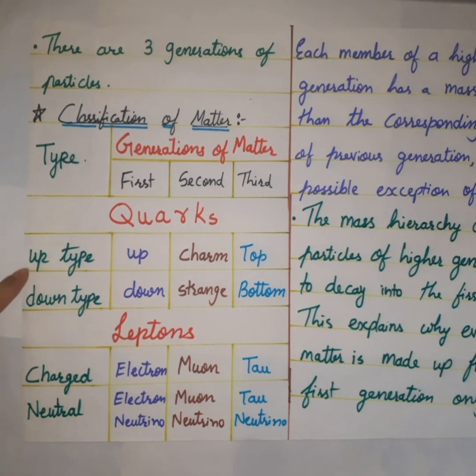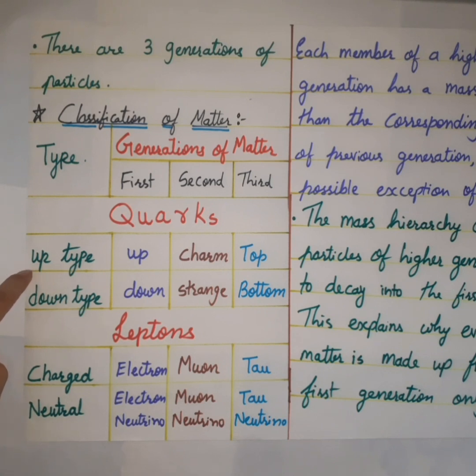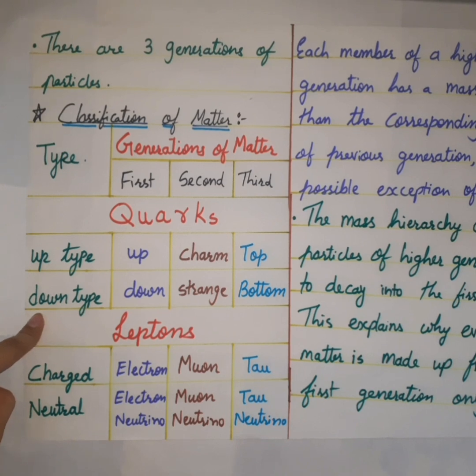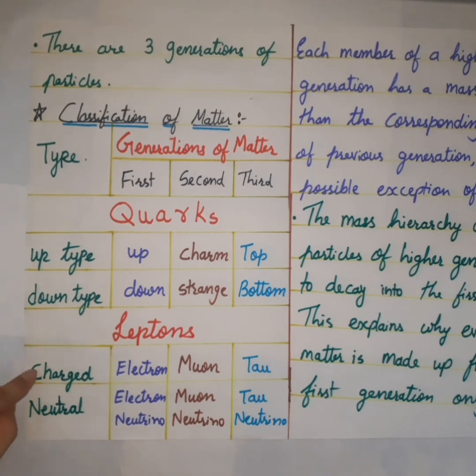They are subdivided into quarks and leptons. The two quarks may be classified into up type and down type. The charge for the up type quarks is plus 2 upon 3E, whereas the charge for down type quarks is minus 1 upon 3E. The two leptons can be classified into leptons with electric charge minus 1 and leptons which have zero charge, that is the neutral leptons.